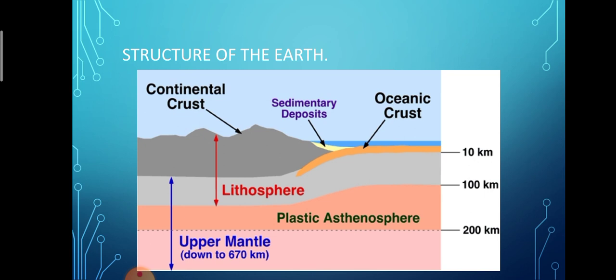It has two distinct layers. The first layer is known as continental crust and the second is oceanic crust. Continental crust is also called sial, and oceanic crust is also known as sima. The continental crust constitutes the uppermost layer of the earth's crust, with a thickness up to 50 km. It consists of lighter rocks rich in silica and aluminium, and is mostly found in continental areas above the lower crust.